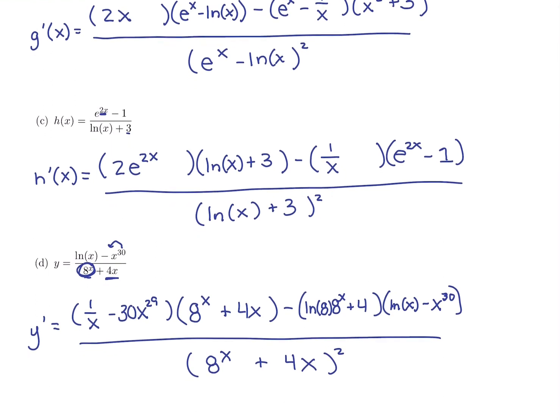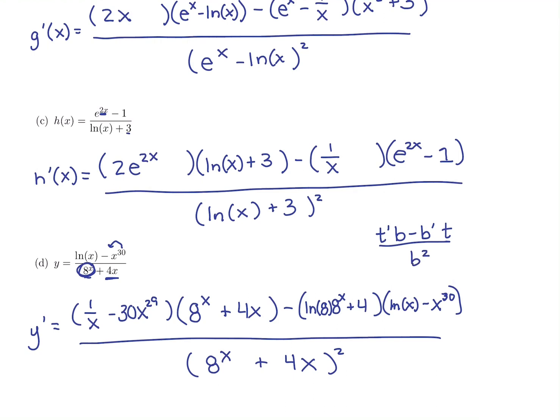So again: derivative of the top, original bottom, minus derivative of the bottom times the original top, all over the original denominator squared.